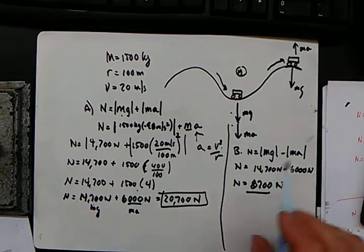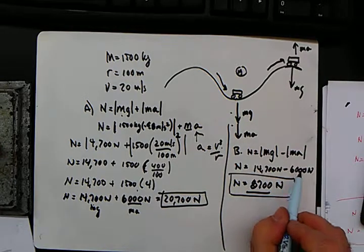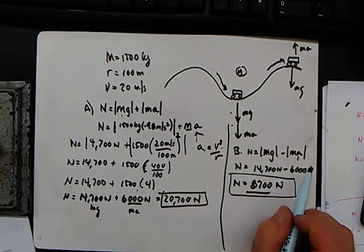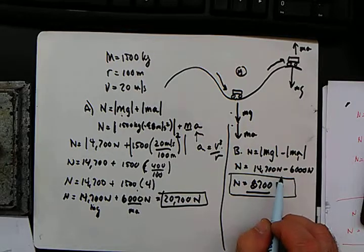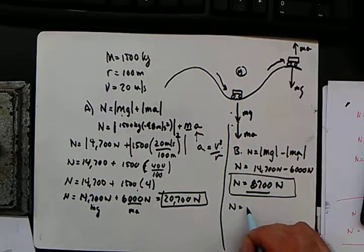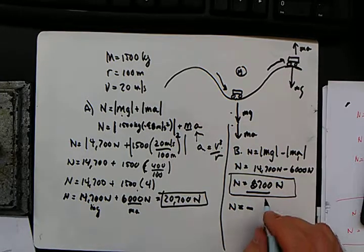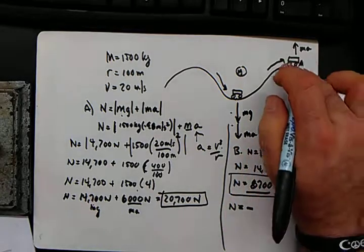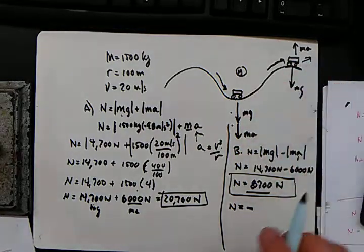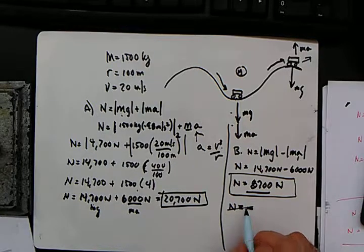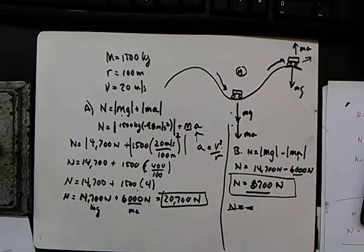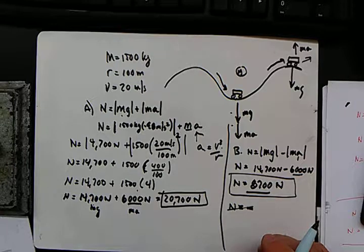The car apparently weighs a lot less at the top. As the centripetal acceleration approaches 9.8 m/s², the normal force approaches zero. Once the normal force would go negative — which can't physically exist — the car flies off the track. In this problem, subtracting 6,000 from 14,700 keeps it positive, but had the centripetal term been larger, the car would have left the road. That's apparent weight for a car going over a hill.